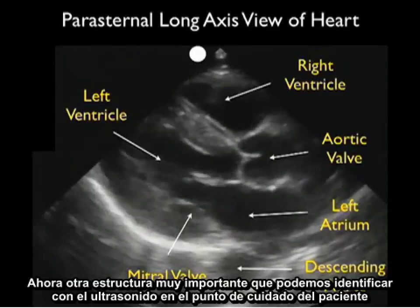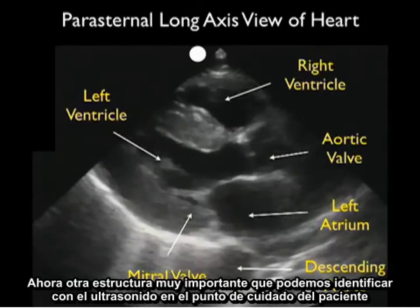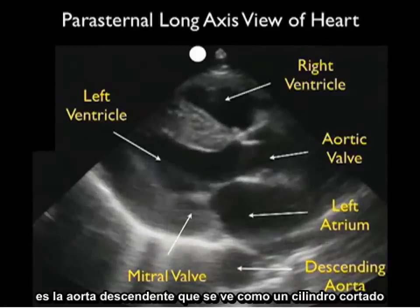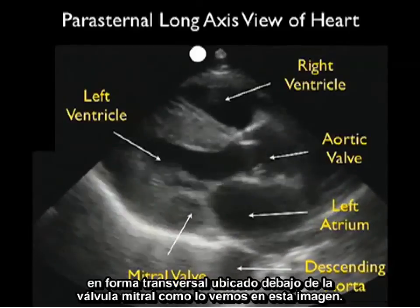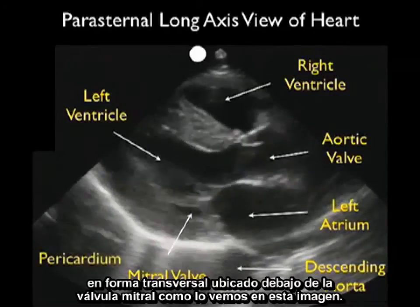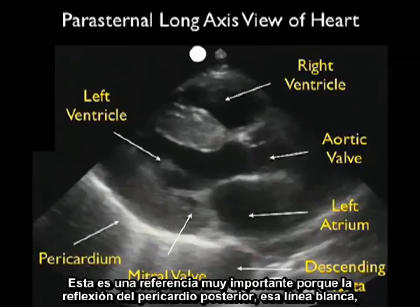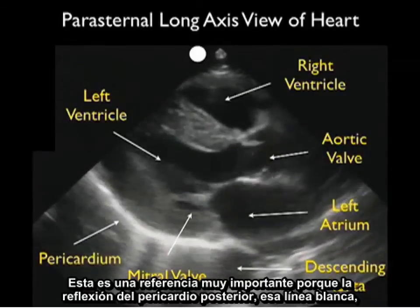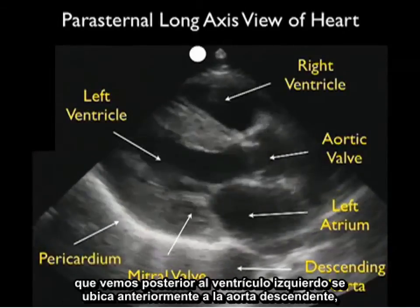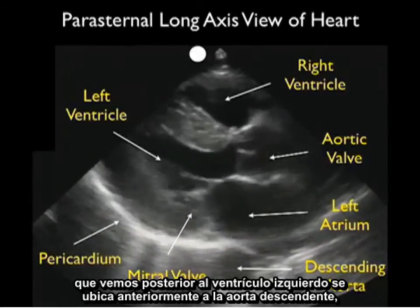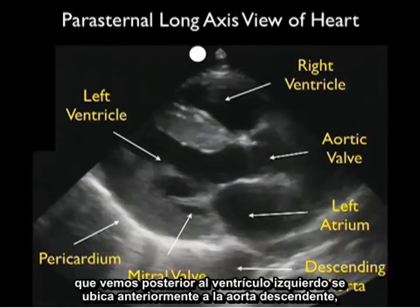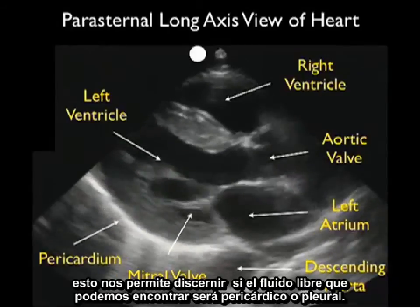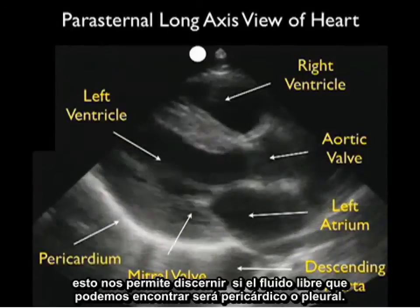Another very important structure to identify on bedside sonography is the descending aorta, which is a cylinder cut in cross-section right below the mitral valve, as seen in this image. This is a very important landmark because the posterior pericardial reflection — that white line seen posterior to the left ventricle — comes off anterior to the descending aorta. This allows us to tell if the fluid that we see there may be pericardial or pleural.